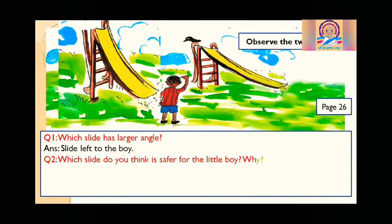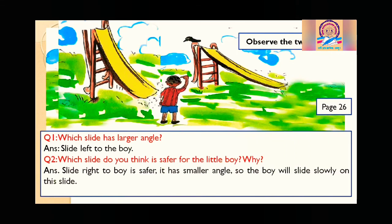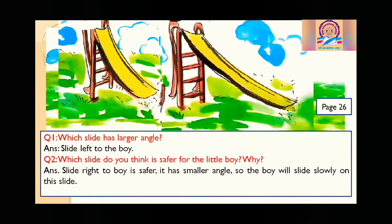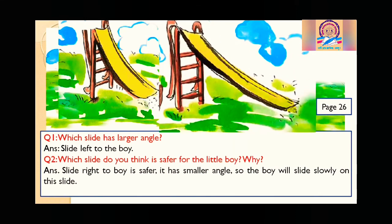Question two: which slide is safer for the little boy? Of course, slide B — the slide on the right. Why? It has a smaller angle, and the benefit of a small angle is that he will come down slowly. So slide B is safer.